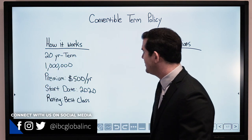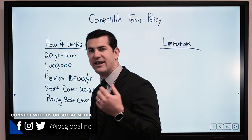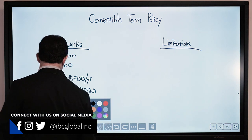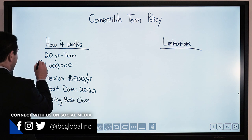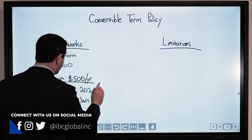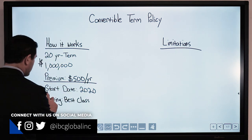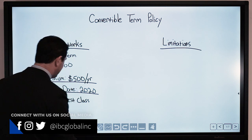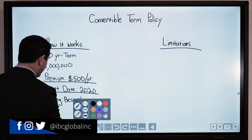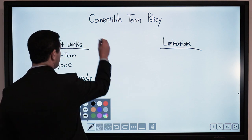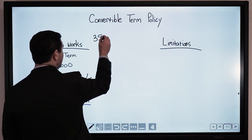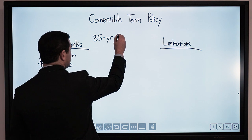So how it works, let's begin with that. Let's assume that I have a 20-year term insurance policy, million dollar death benefit, premium is $500 per year, and we're going to assume I start this policy in 2020 and I am a healthy individual. In this specific example we are going to look at a 35-year-old male.